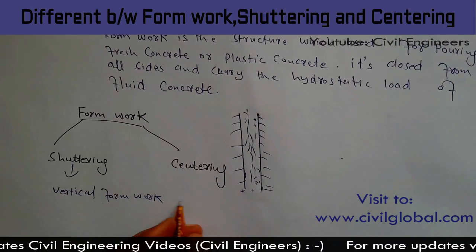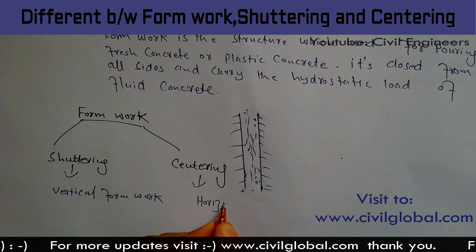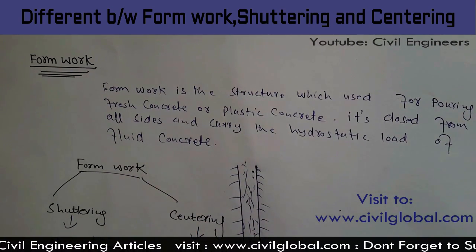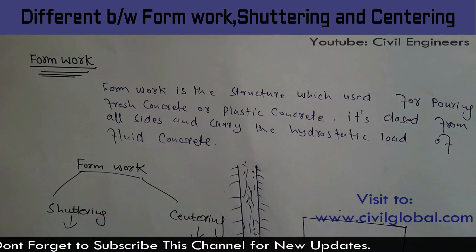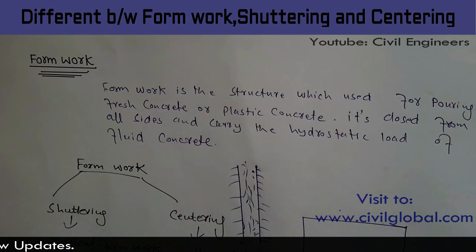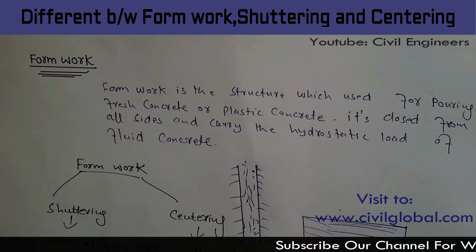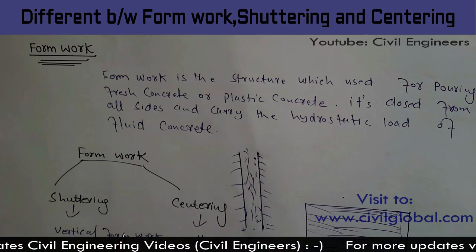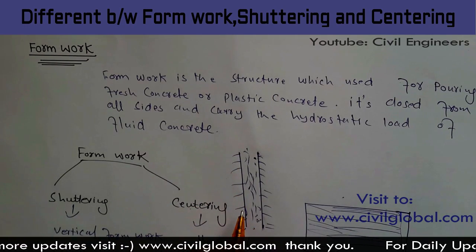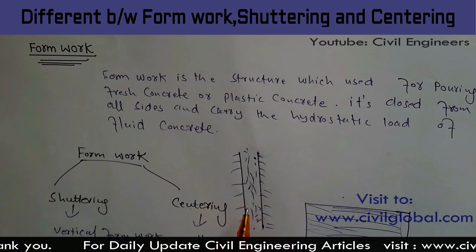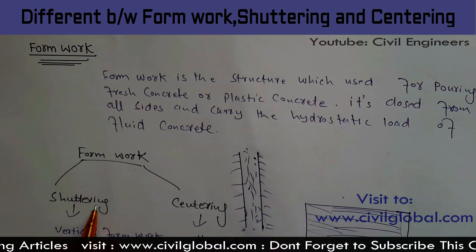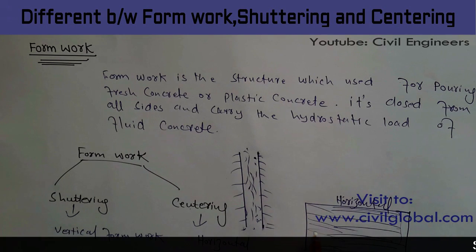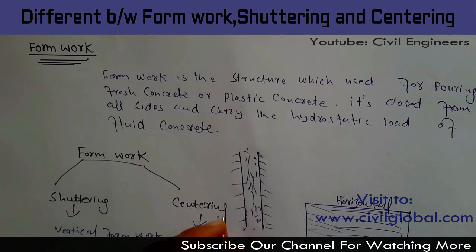Vertical formwork is called shuttering, and centering is horizontal. Centering is a kind of slab — when you want to do concrete in a slab, those formwork supports which you provide for the slab are called centering. Shuttering is vertical formwork used for columns, revetment walls, or retaining walls constructed from concrete. Centering is the horizontal formwork used for slabs.